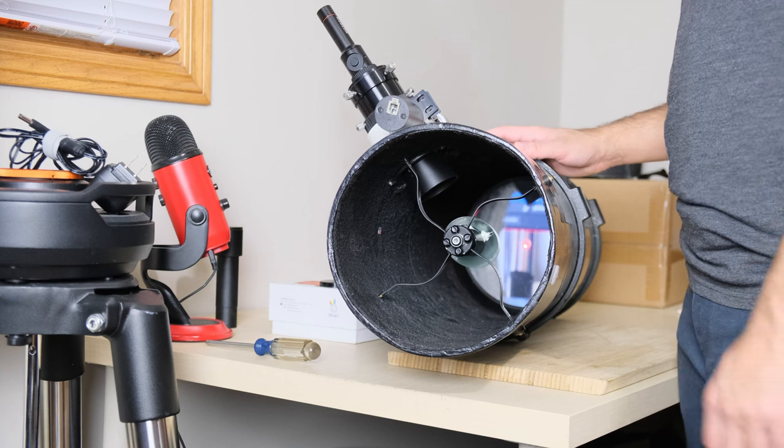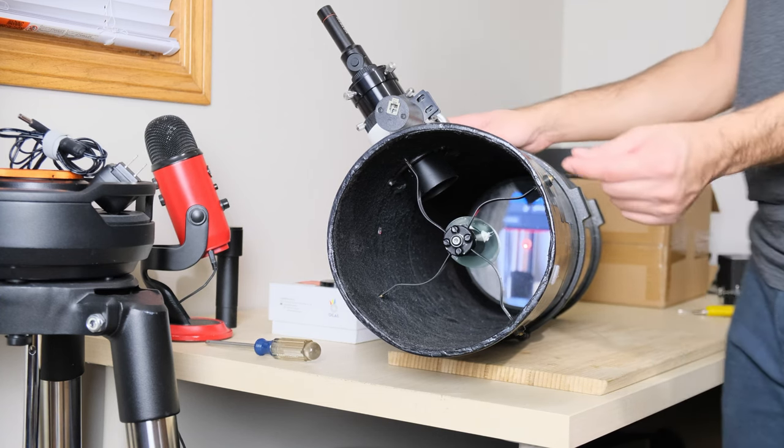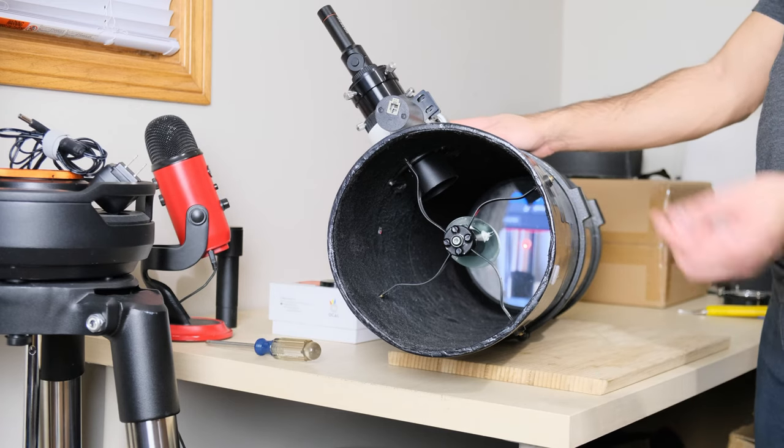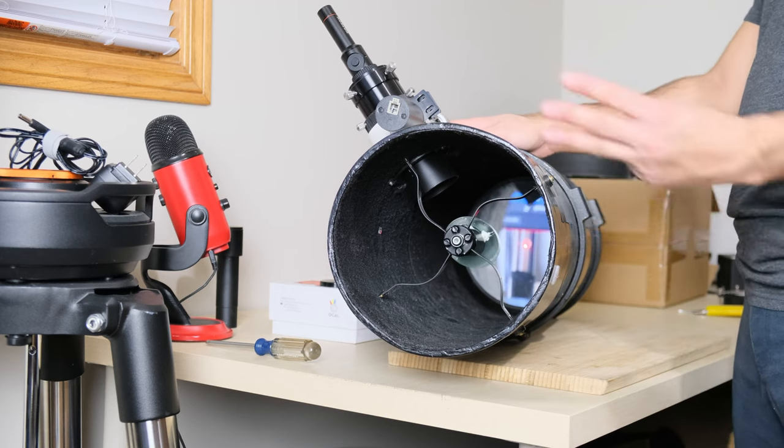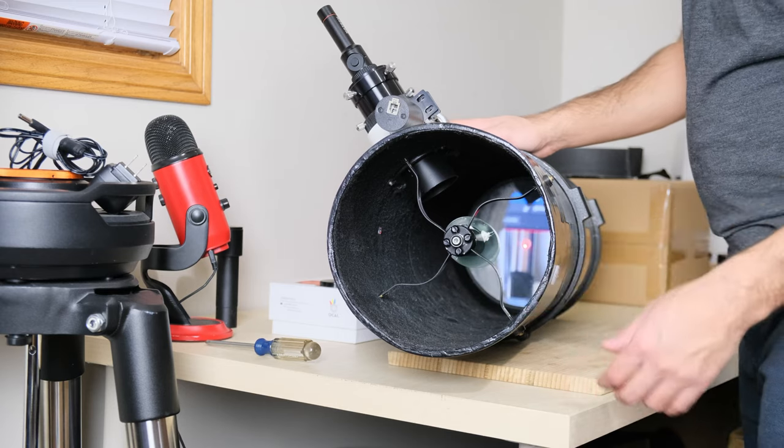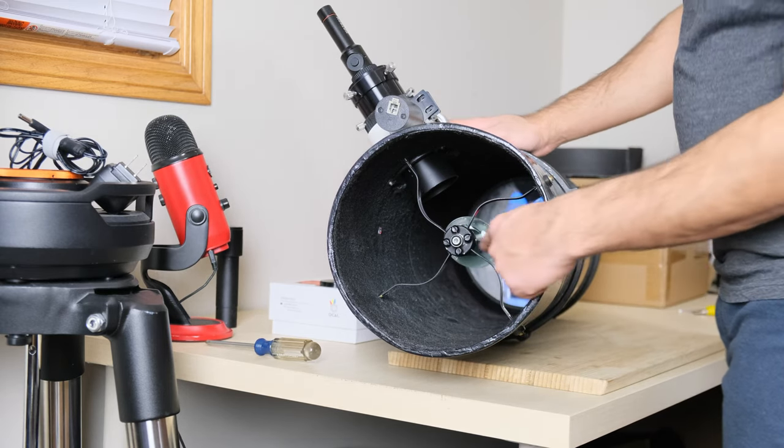In most telescopes, you're going to have some allen bolts and you're going to need an allen key to adjust the three collimation screws at the back of the secondary. Most telescopes only have three of them. If you have Bob's Knobs installed, then you can just do it by hand like I'm doing. In some cases, you may have to gently loosen the center bolt just a tiny bit to be able to make any changes.